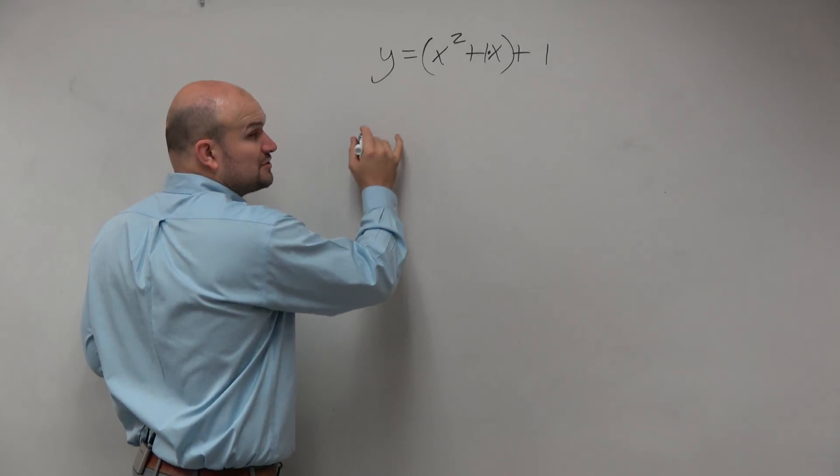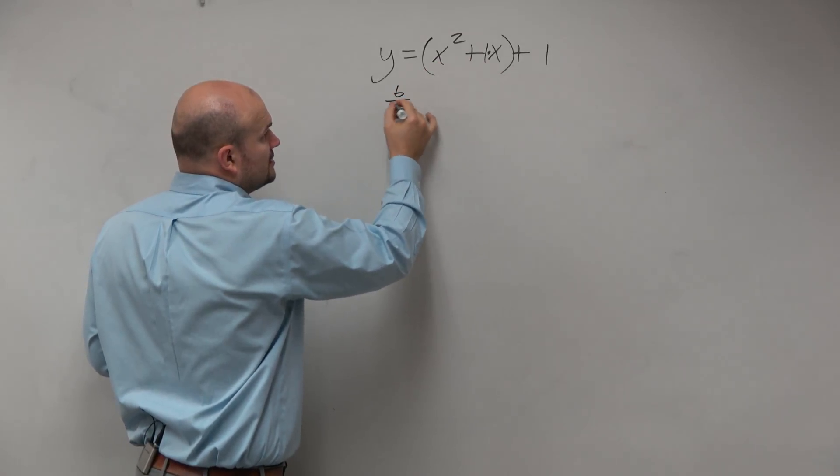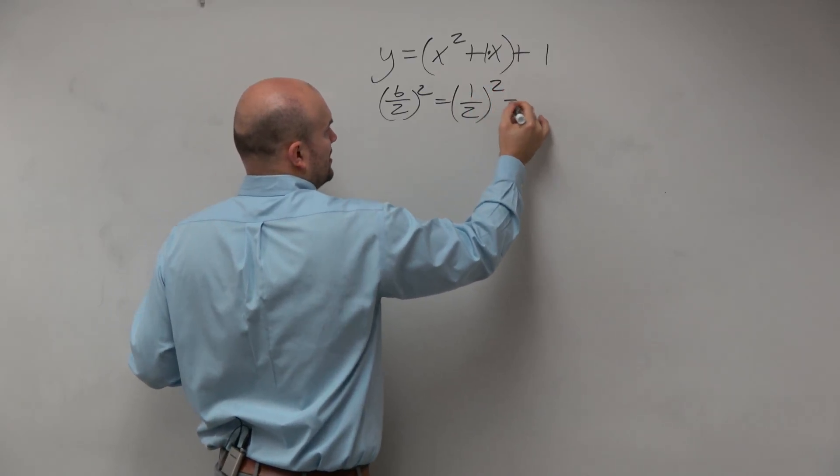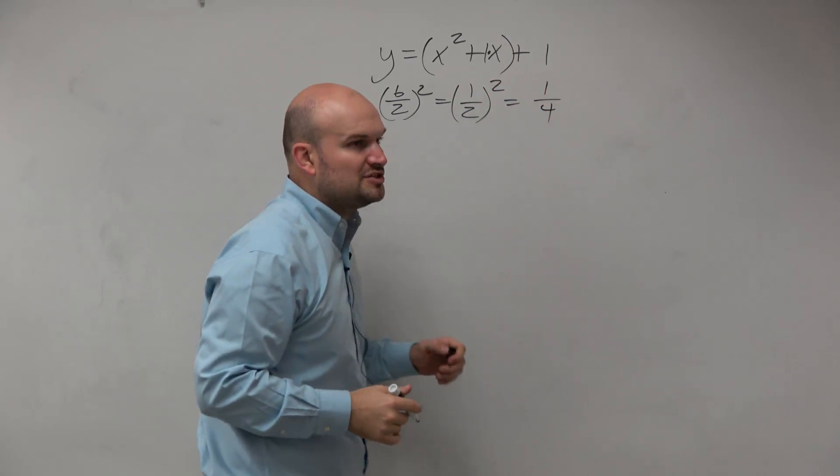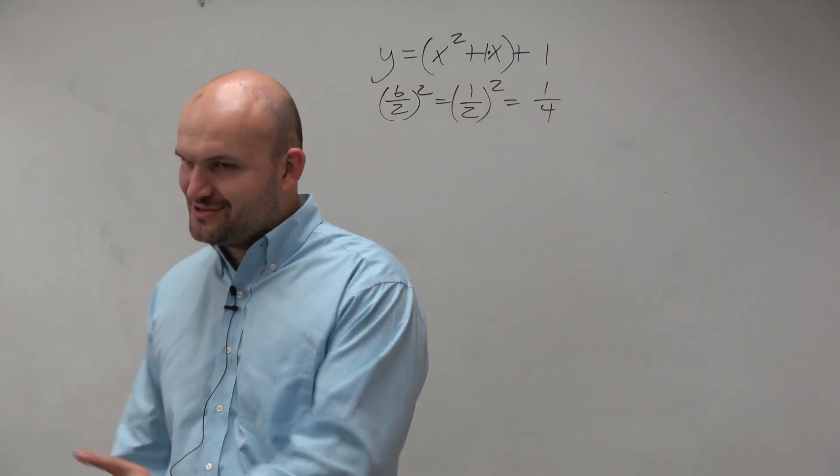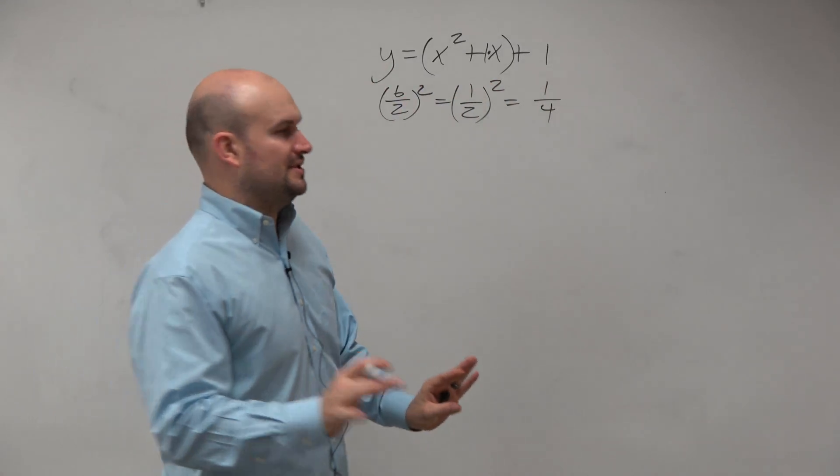So what we're going to do is we're going to take our b, which is 1, divided by 2, and square it. 1 divided by 2 is 1 half. Squared equals 1 half times 1 half, which is 1 fourth. Ooh, fractions. I was going to get you fractions, but that's OK. We can do this.